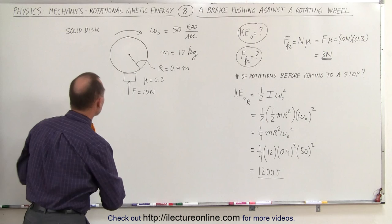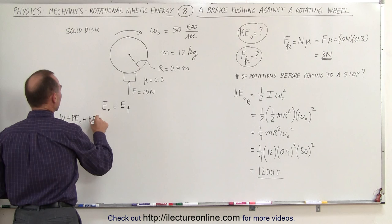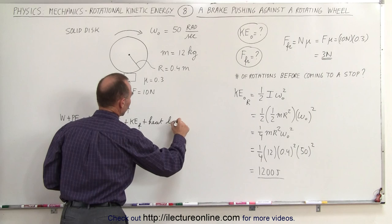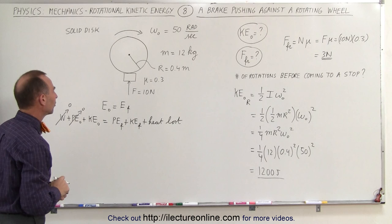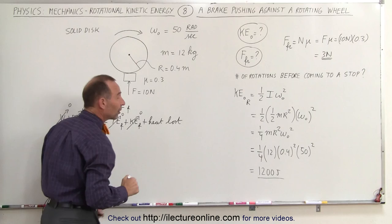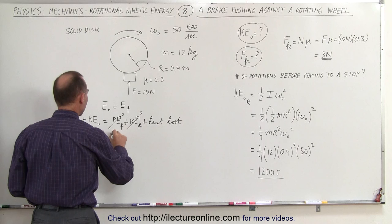Now we need to calculate the number of rotations before coming to a stop. We'll use energy conservation: energy initial equals energy final. Any work input plus initial potential energy plus initial kinetic energy must equal final potential energy plus final kinetic energy plus heat loss due to friction. There's no potential energy since the wheel doesn't change height, no work input, so those are zero. Initial kinetic energy is 1200 joules, final potential and kinetic energies are zero because the wheel is completely stopped. The equation reduces to: initial kinetic energy equals heat lost due to friction.